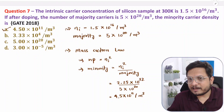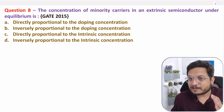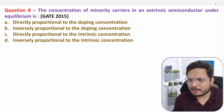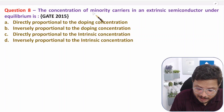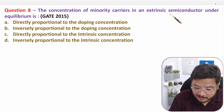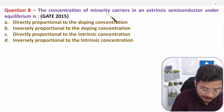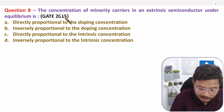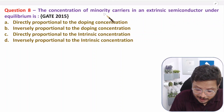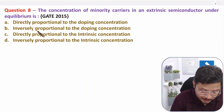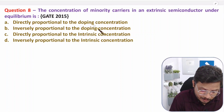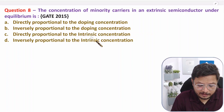Let us have the second interesting question. This second question is also based on mass action law. The concentration of minority carriers in extrinsic semiconductor material under equilibrium is to be determined. We are dealing with the concentration of minority carriers and need to see how it relates to doping concentration and intrinsic concentration.